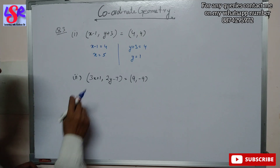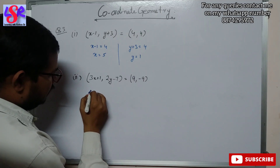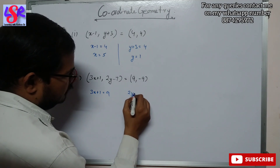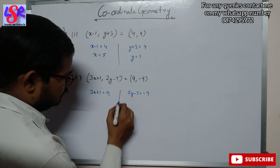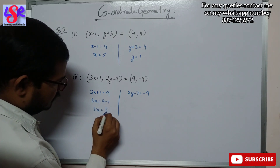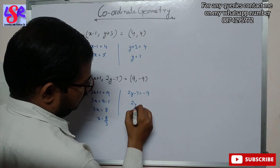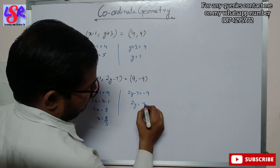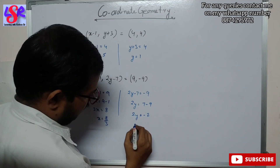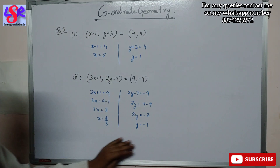Now let us see the second part. Here we are having 3x plus 1 equals to 9 and 2y minus 7 equals to minus 9. On equating, 3x plus 1 equals to 9 gives us 3x equals to 8, so x equals to 8 upon 3. Then 2y minus 7 equals to minus 9 gives 2y equals to minus 2, and y equals to minus 1. So we have x as 8 upon 3 and y as minus 1.